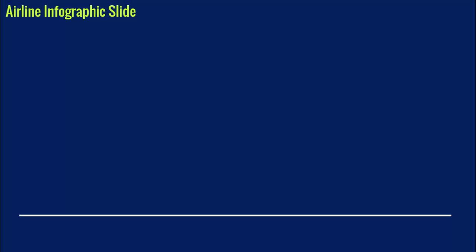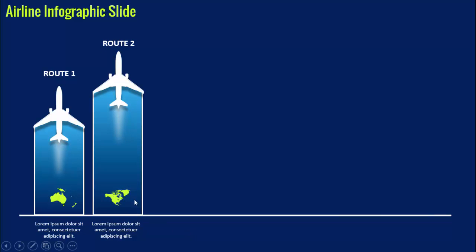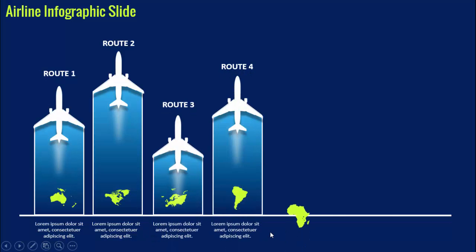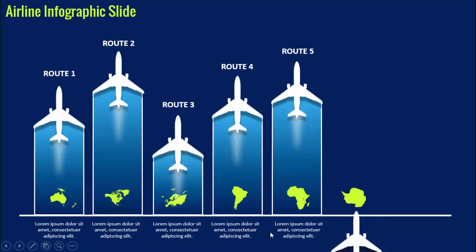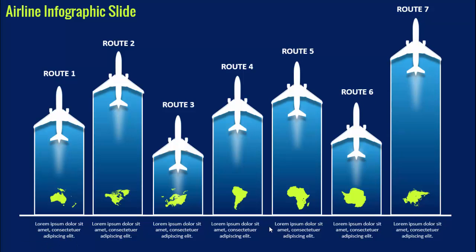In today's tutorial I'm going to show you how to create an airline infographic slide in PowerPoint. When I click, you can see I've added the map of Australia, the image of the aeroplane, and you can add the title and detail text at the bottom. When I click it will show the second map with a longer route — route number two with detail text. I've added many different options with different maps, such as route six and route seven.